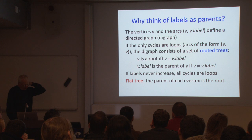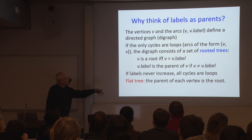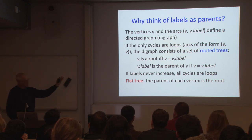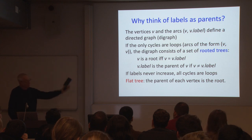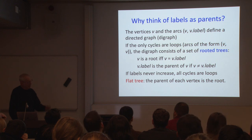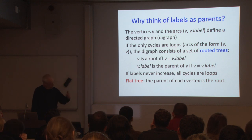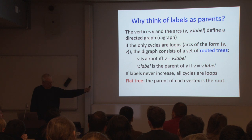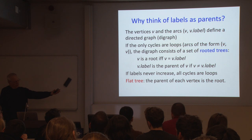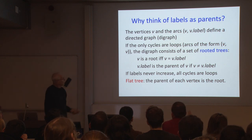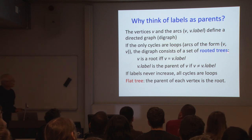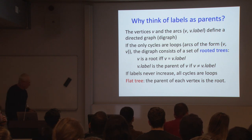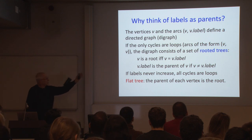Why think of labels as parents? All the algorithms keep a label for every vertex. If we think of a vertex and its label as a directed edge, this gives us a directed graph in which each vertex has out-degree one. If we can guarantee that the only cycles are self-loops, the digraph consists of a collection of rooted trees, and the label is the parent of a vertex in that set of rooted trees.